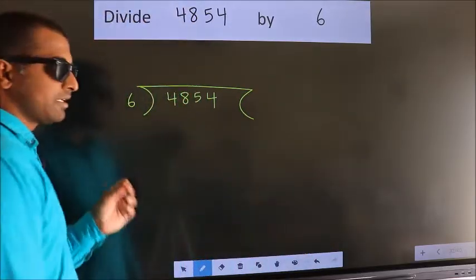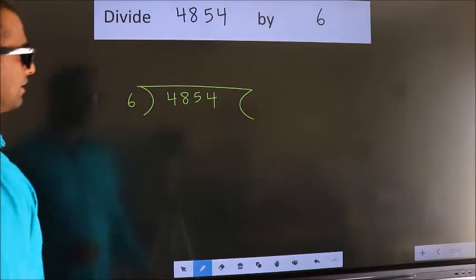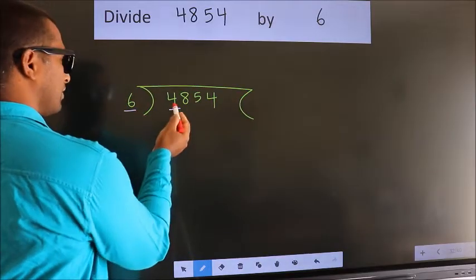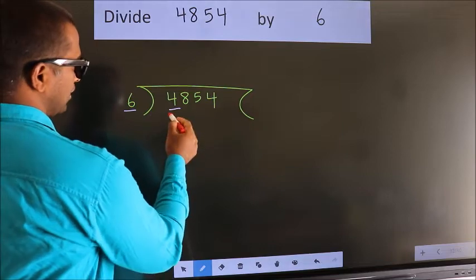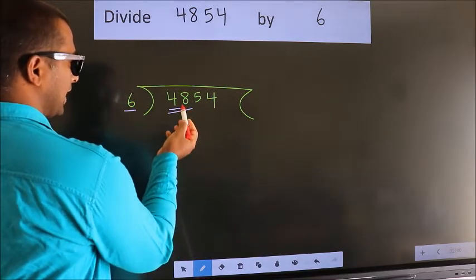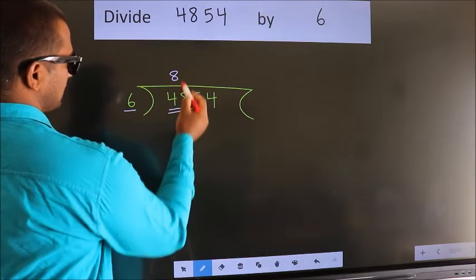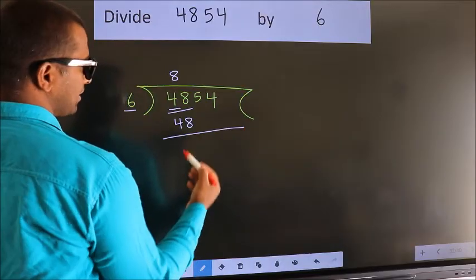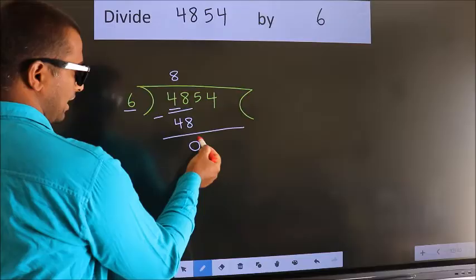This is your step 1. Next, here we have 4. Here 6. 4 smaller than 6. So we should take two numbers, 48. When do we get 48 in the 6 table? 6 times 8 is 48. Now we should subtract. We get 0. After this,